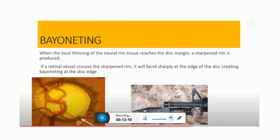Bayonetting is characterized by double angulation of a blood vessel. With neuroretinal rim loss, a vessel entering the disc from the retina may angle sharply backward into the disc and then turn towards its original direction to run across the lamina cribrosa. This occurs when the thinning of the neuroretinal tissue reaches the disc margin, then a sharp rim is produced. When the blood vessel crosses this sharp rim, it will bend sharply at the edge of the disc, creating bayonetting at the disc margin.